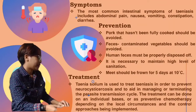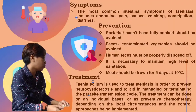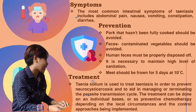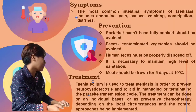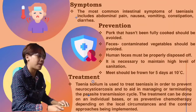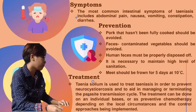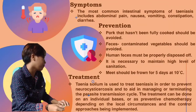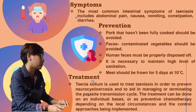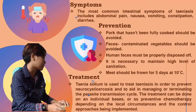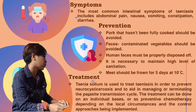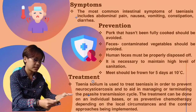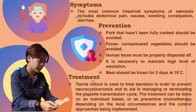For the treatment, Taenia solium treatment is used to treat taeniasis in order to prevent cysticercosis and to aid in managing or interrupting the parasite transmission cycle. The treatment can be done on an individual basis or as preventive chemotherapy depending on the local circumstances and the control approaches being implemented. Anti-parasitic treatments and corticosteroids are used.